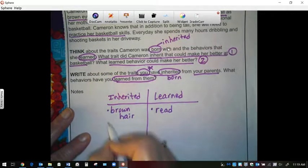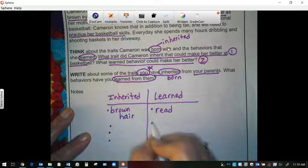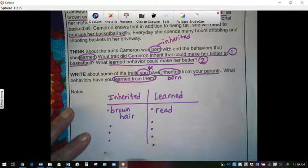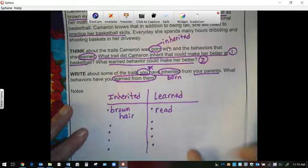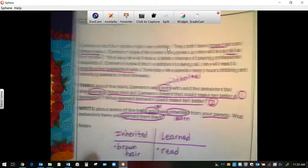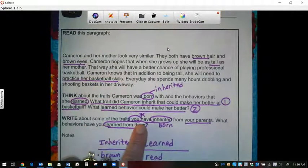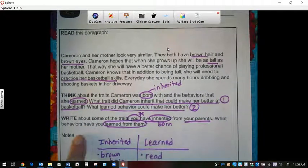So you're going to continue writing a list and you can do as many as you need of inherited and learned. And then on the back page you are going to write it, and it says here you're going to write about some of the traits you have inherited from your parents and what behaviors you've learned.